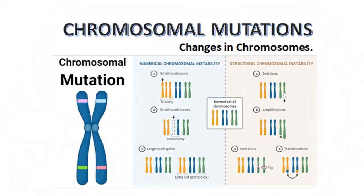Changes may occur at the level of chromosomes as well as in genes. Mutations to chromosomes may occur in a variety of ways. For example, sometimes parts of chromosomes are broken off and lost during mitosis or meiosis. Often, chromosomes break and then rejoin incorrectly. Sometimes the parts join backwards or even to the wrong chromosome. These changes in chromosomes are called chromosomal mutations.